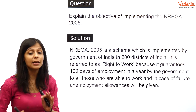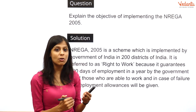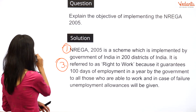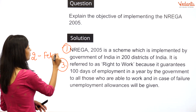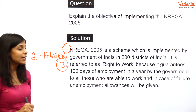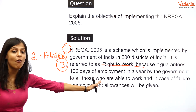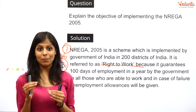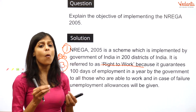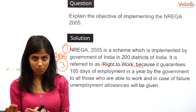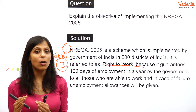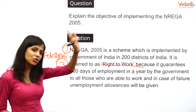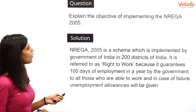NREGA came into force in February 2006. It is also known as the right to work because it guarantees 100 days of employment in a year to all those willing to work as unskilled labourers. If the government fails to provide employment, people are given an unemployment allowance. So NREGA is essentially another name for the right to work.